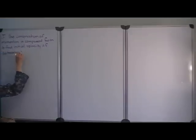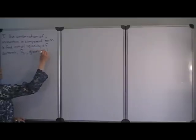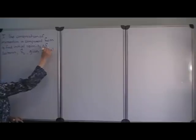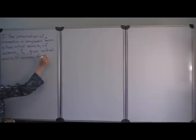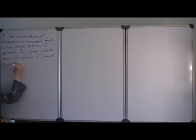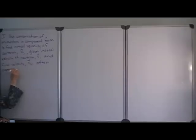We're going to call the initial velocity of the deuteron V2 because we're going to call the deuteron mass 2. We'll call the neutron V1 and M1. We'll call the final velocity of the tritium nucleus Vf. The collision is completely inelastic, which is important for our analysis.